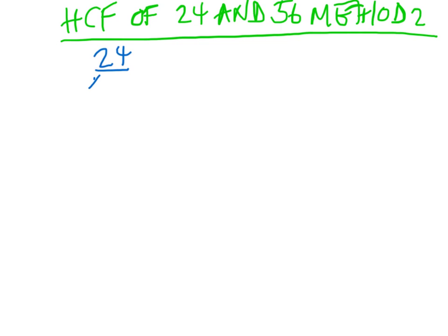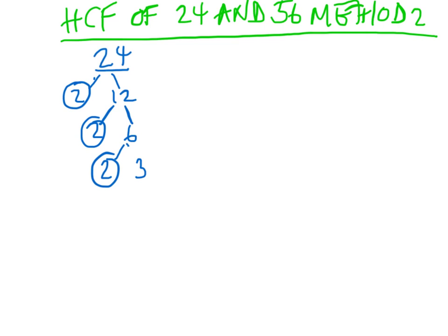For 24, we start off with a small prime number — we start off with 2. If 2 doesn't go into the number, we try 3, then 5, and we work our way through the prime numbers. So 2 does go into 24, 12 times, and 2 is a prime number. Does 2 go into 12? Yes, it goes 6 times. And 2 goes into 6 as well — it goes 3 times. And 3 is also a prime number. Now we've reached the stage where we've got prime numbers all the way down our tree, so there's no point in dividing any further. So 24 is 2 times 2 times 2 times 3.